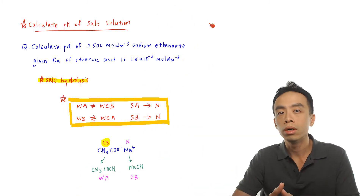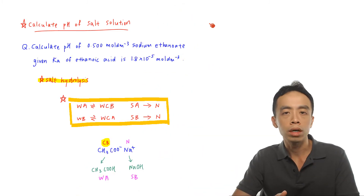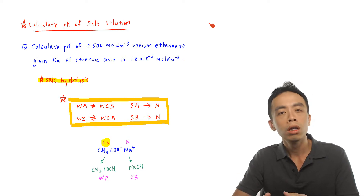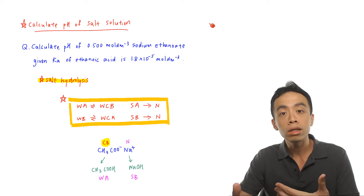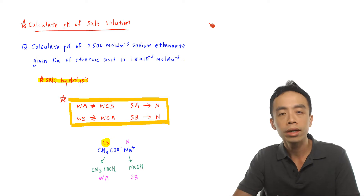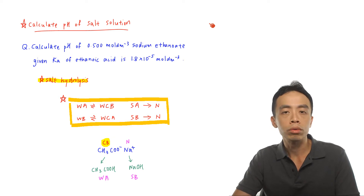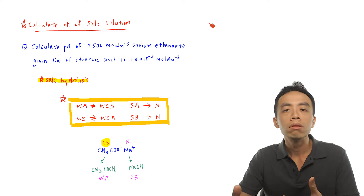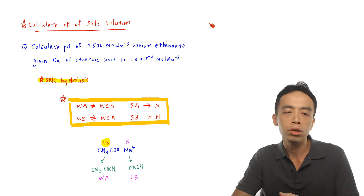In ionic equilibria, sometimes we are required to determine the nature of a salt solution, whether it is acidic, neutral, or alkaline, and we are also required to calculate the pH of the salt solution given certain information.